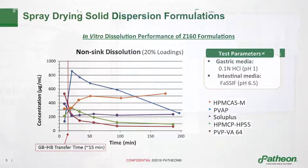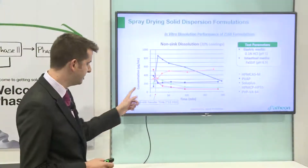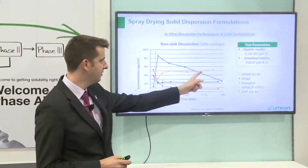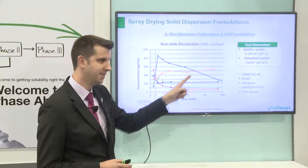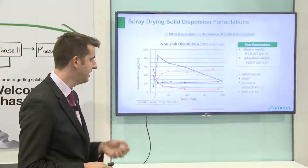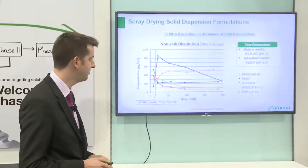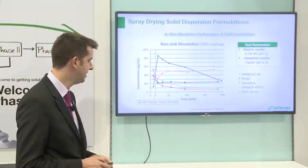What we're looking for is both an increase in solubility — the spring effect — which we see very nicely with PVAP here, but also sustaining this solubility — the parachute effect — which as you can see here with HPMC AS M grade gives us really good data from our different polymers.